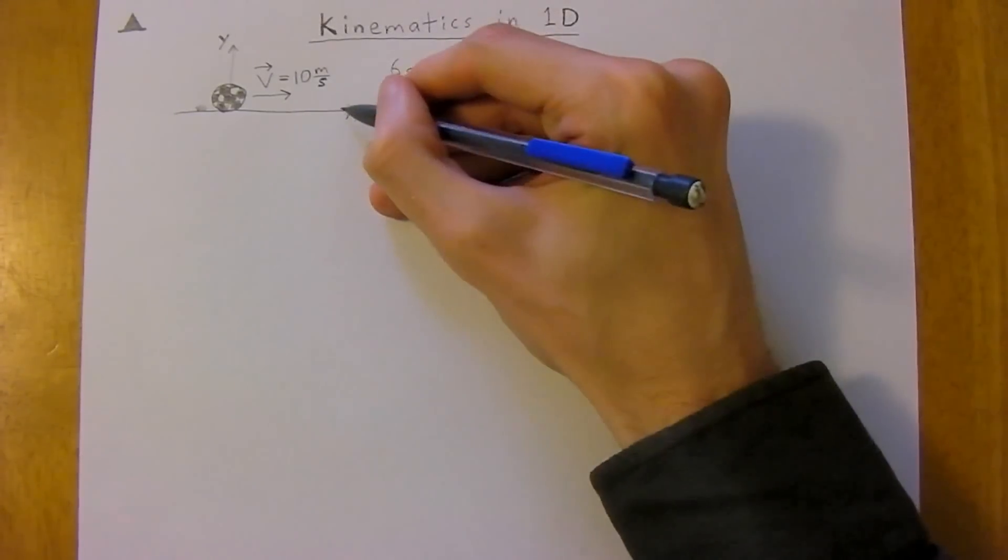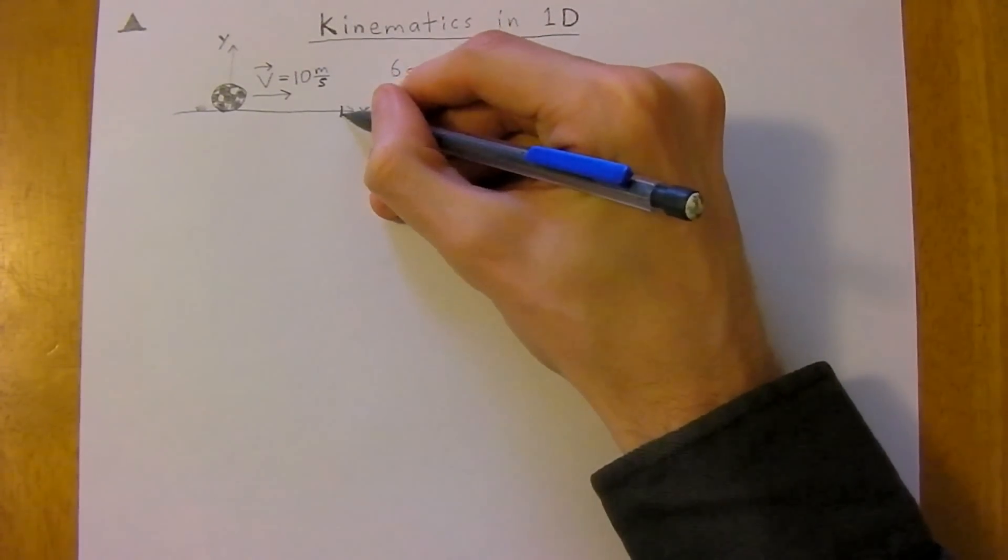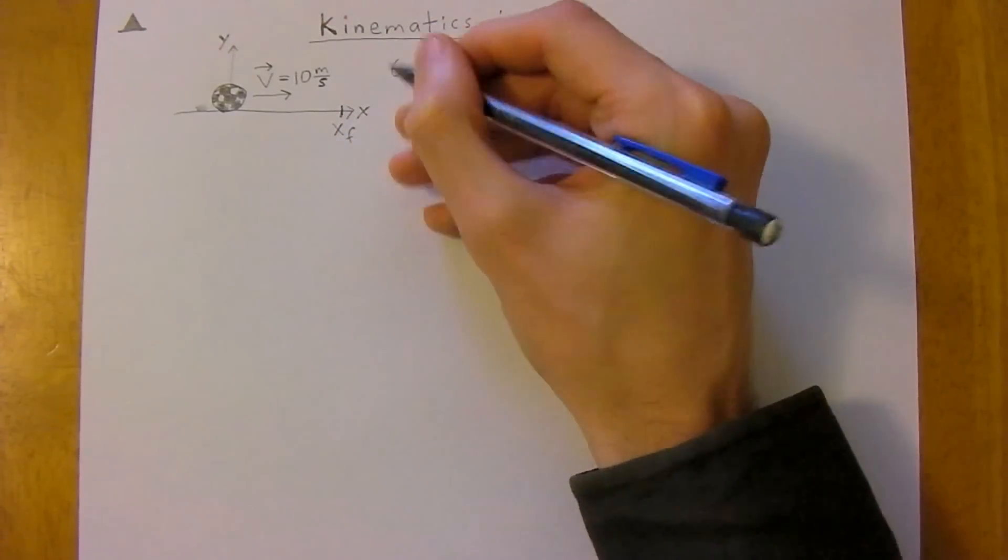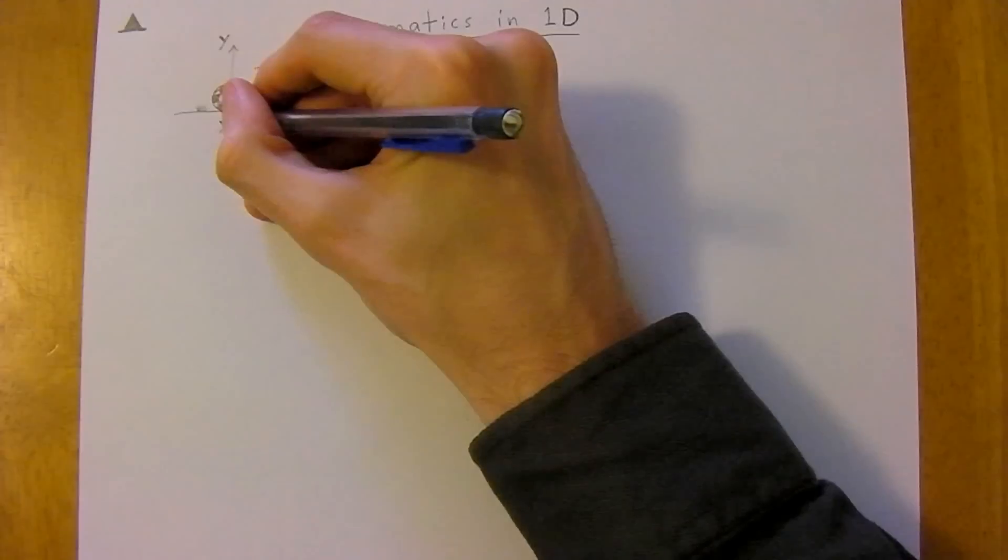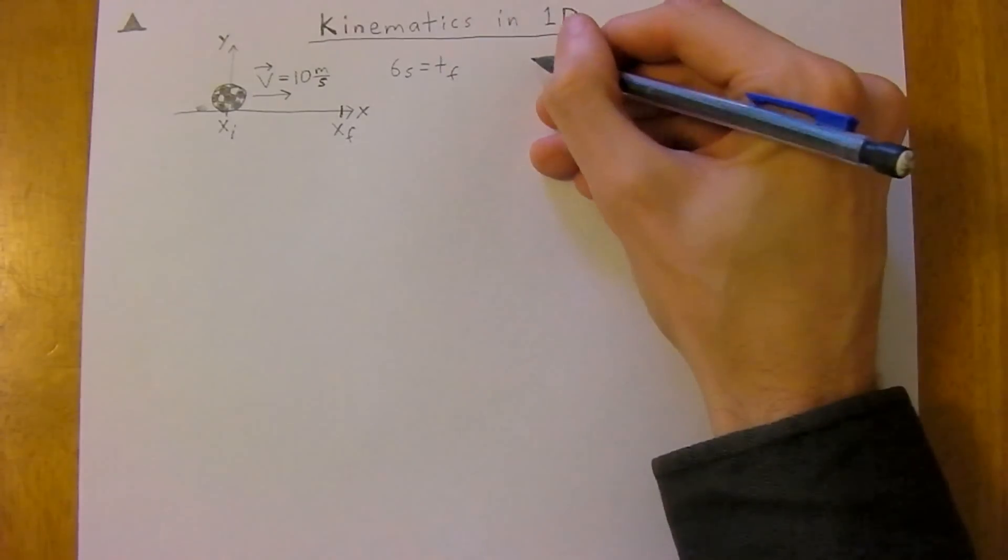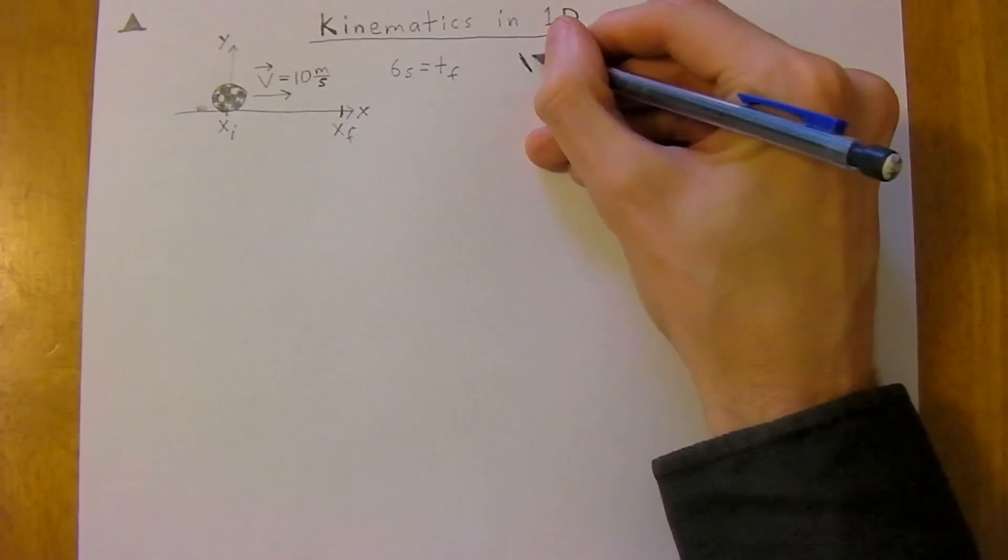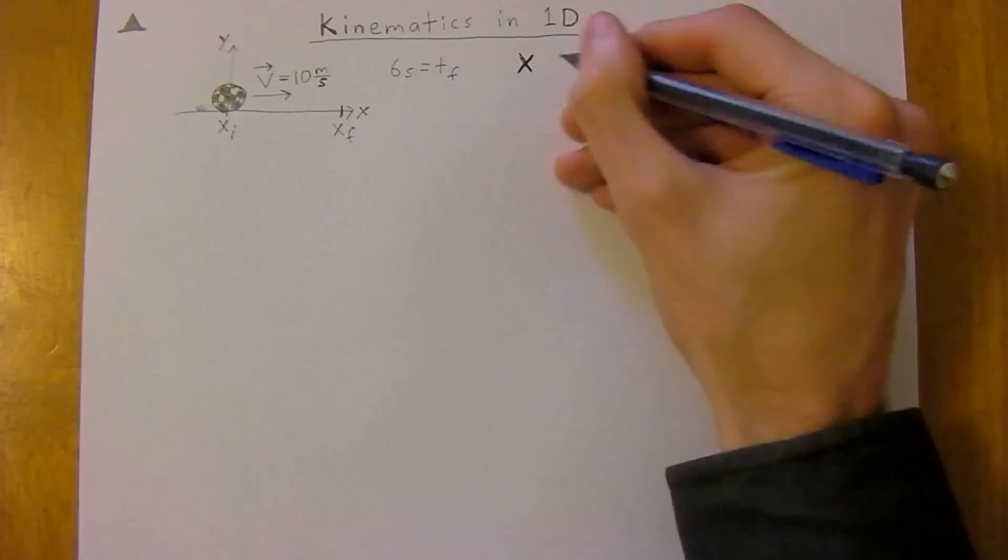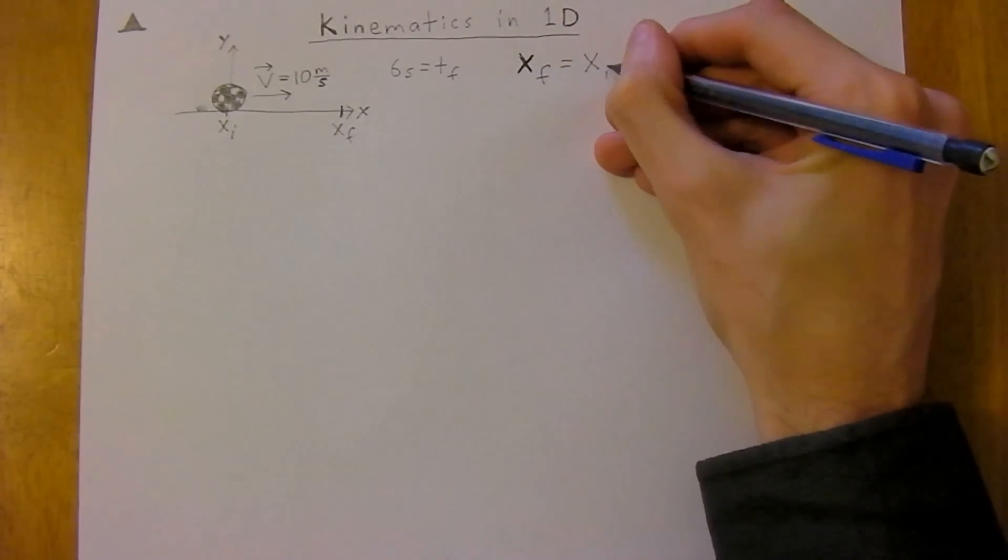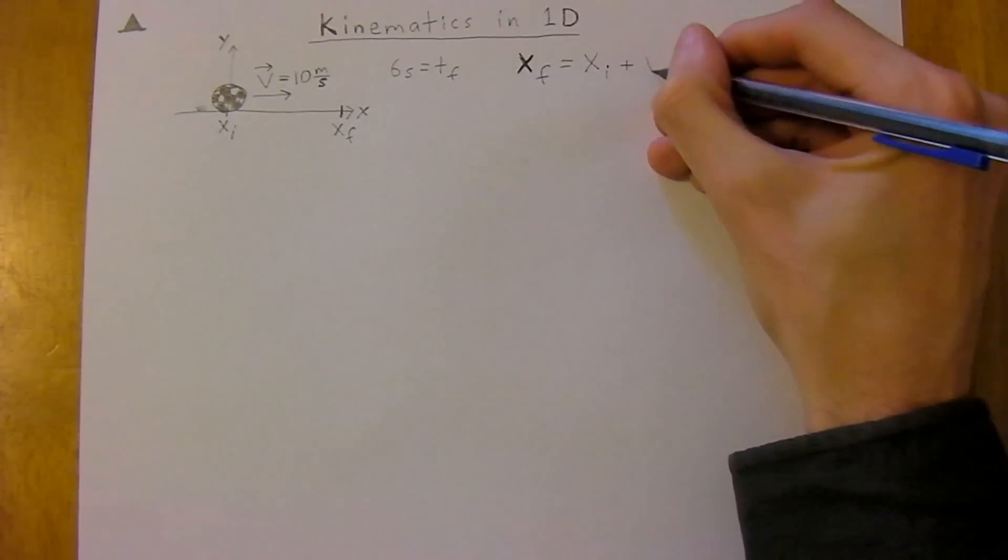And then we're looking for, we want to find its x-final, so its final position after those six seconds and it's starting at its x-initial position. So the equation we would use, which I'm sure some of you are familiar with already, is your x-final equals your x-initial plus your velocity.